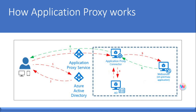Application Proxy then sends the request to the proxy connector. If you have configured single sign-on, the connector performs any additional authentication required on behalf of the user. The connector sends the request to the on-premise application. Finally, the response is sent through the connector and proxy service to the end user.